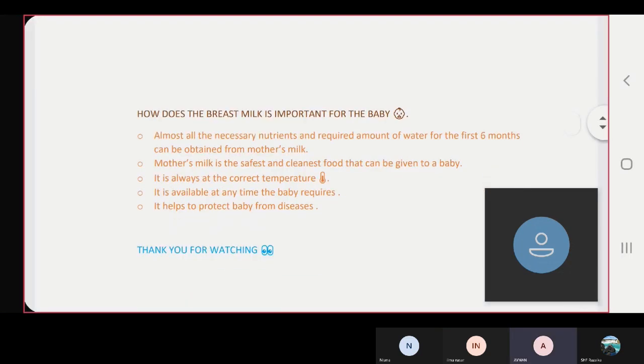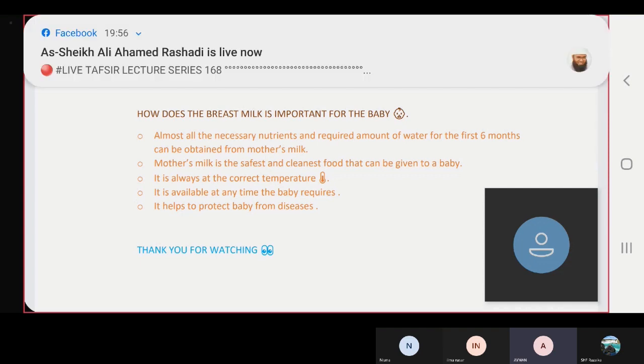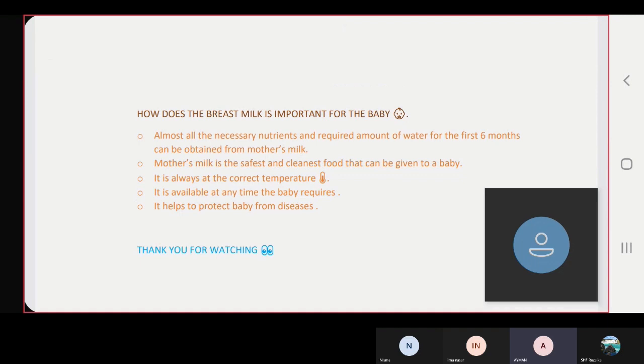How does the breast milk is important for the baby. Almost all the necessary nutrients and required amount of water for the first six months can be obtained from mother's milk. Mother's milk is the safest and cleanest food that can be given to a baby. It is always at the correct temperature. It is available at any time the baby requires. It helps to protect baby from diseases.